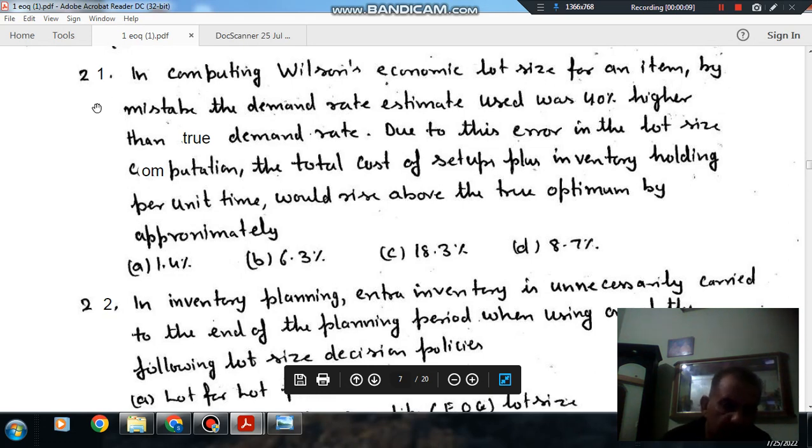Question number 21: In computing Wilson's economic lot size for an item by mistake, the demand rate estimate used was 40% higher than the true demand rate. Due to this error in the lot size computation, the total cost of setup plus inventory holding per unit time would rise above the true optimum by approximately...